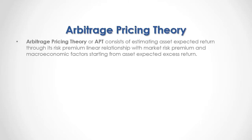Arbitrage Pricing Theory, or APT, consists of estimating asset expected return through its risk premium linear relationship with market risk premium and macroeconomic factors, starting from asset expected excess return.